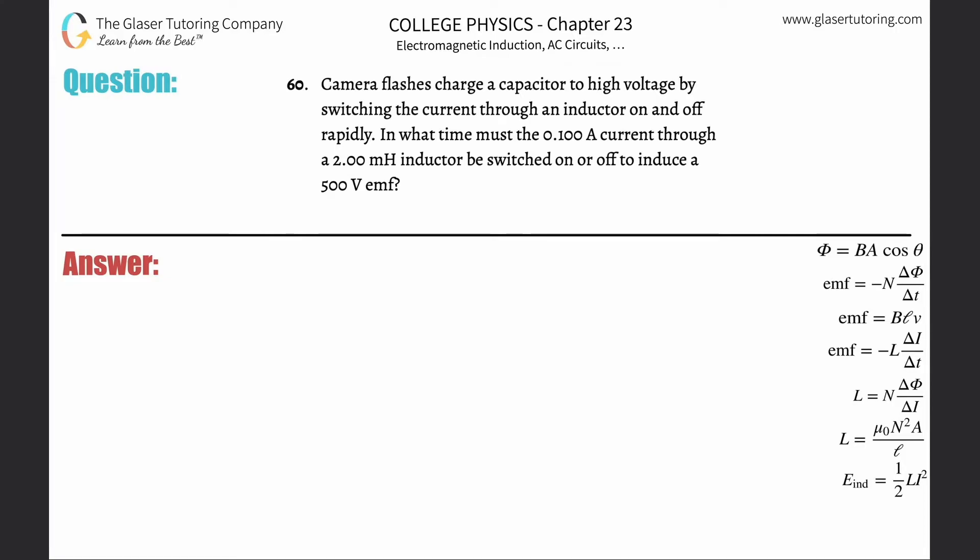Number 60: Camera flashes charge a capacitor to high voltage by switching the current through an inductor on and off rapidly. In what time must the 0.1 amp current through a 2 millihenry inductor be switched on or off to induce a 500 volt emf?